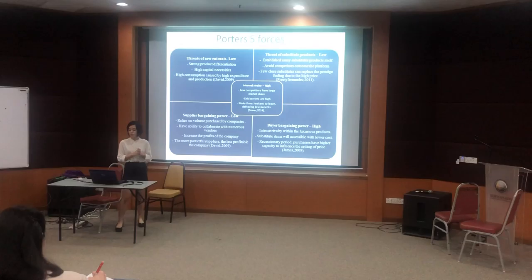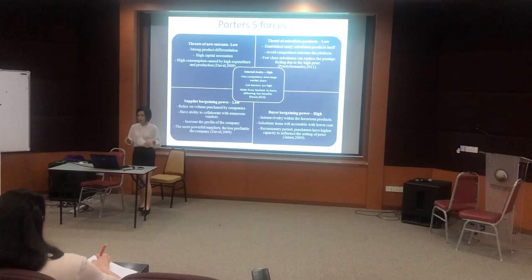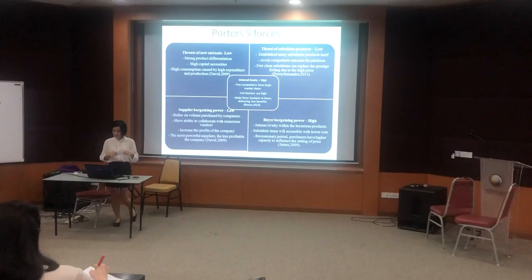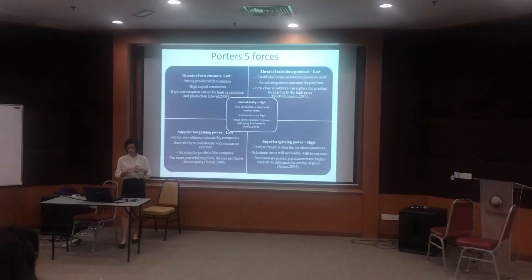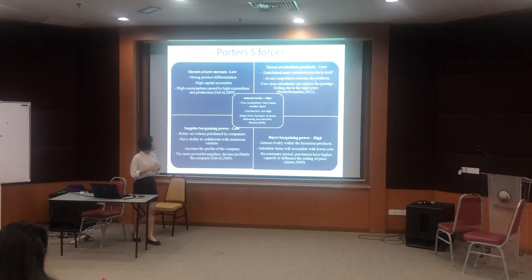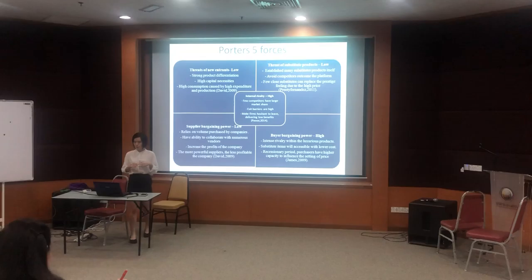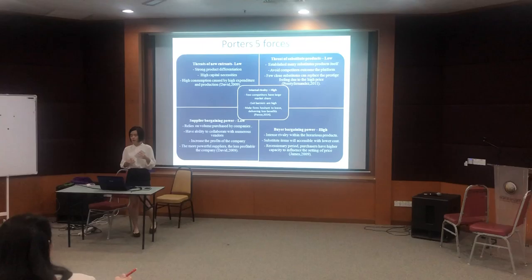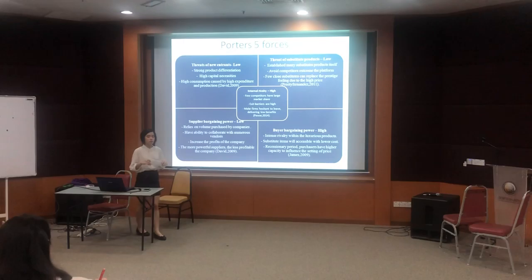They have a low threat of substitute products because Gucci Company itself has already established many substitute products — for example, wallets, shoes, perfumes, etc. — to avoid competitors replacing the platform. The supplier bargaining power is low because suppliers rely on the volume purchased by companies. Gucci Company has the ability to partner with numerous vendors to reduce the power of supplier bargaining. The company is a profitable company, therefore the bargaining power of suppliers is low.